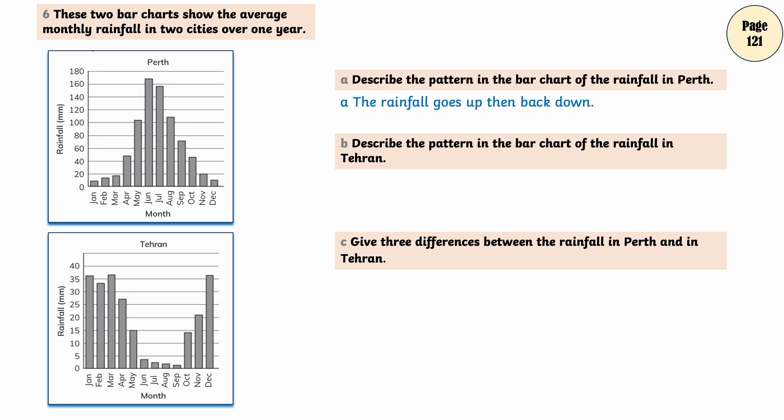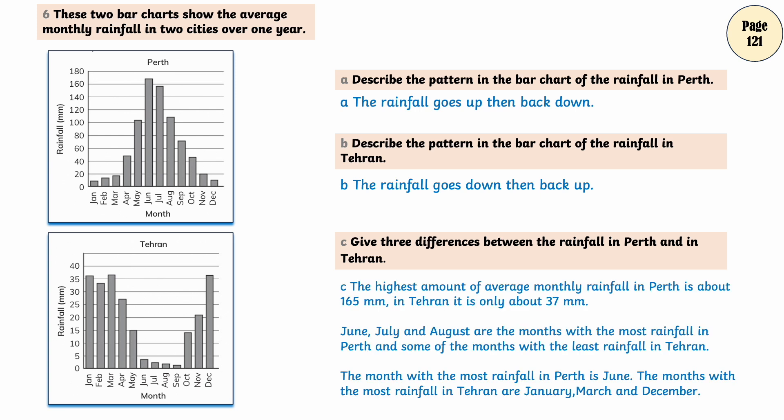Describe the pattern in the bar chart of the rainfall in Tehran. The rainfall goes down then back up. Give three differences between the rainfall in Perth and in Tehran. The highest amount of average monthly rainfall in Perth is about 165 mm. In Tehran it is only about 37 mm.